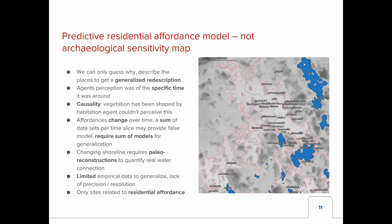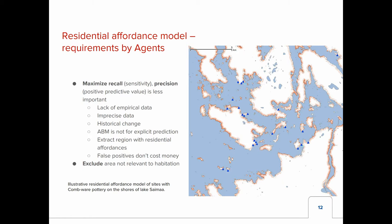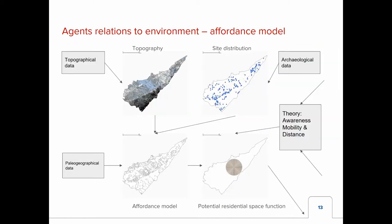As I'm focusing on residential affordance, only residential settlement sites are of interest. There is also a technical requirement: we should maximize recall at the cost of precision, because we are more interested in excluding areas not relevant to habitation than vice versa. This is not going to be an explicit prediction. We have topographical data, a site distribution map, and together with paleo-geographical data, we can create this predictive residential affordance model.